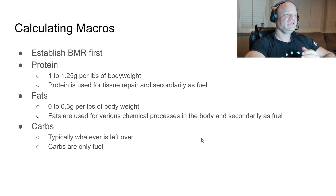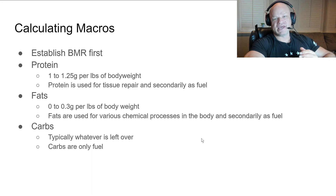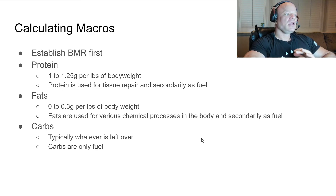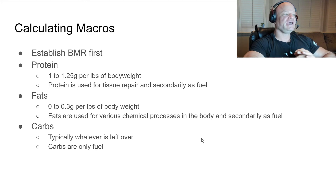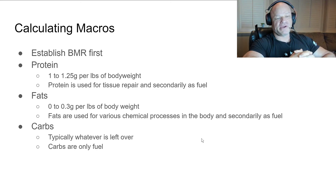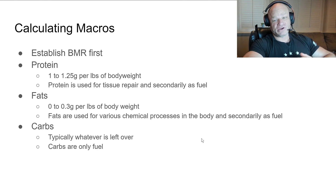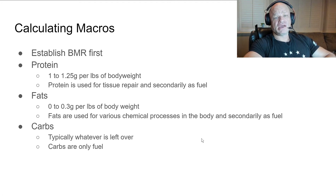If you're enhanced and training super hard and want to be safe, there is more protein metabolism when you're enhanced, so we can take that up to 1 to 1.25 grams of protein per pound. Remember, protein is used primarily for tissue repair. We want to build our diet so that protein is prioritized for tissue repair. Secondarily, it can be used as fuel through a process called gluconeogenesis — if your carbs and fats are low enough, your body will start converting protein into blood sugar.